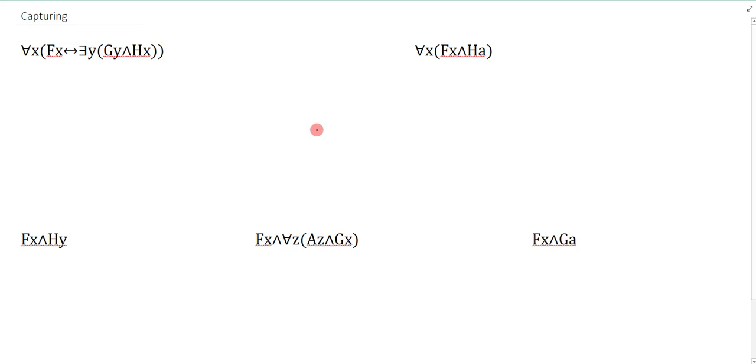In this video, I'm going to go over a problem in our system called capturing, and I'm going to show you that you should never do something that results in capturing, and these are actually related to the restrictions on universal instantiation and existential generalization.